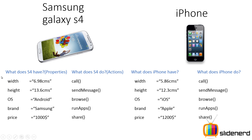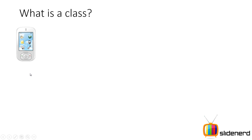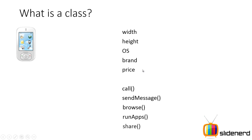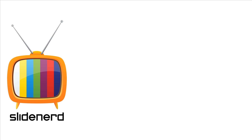You notice there are certain properties which are common to both your iPhone and your Samsung Galaxy S4, and the values are different for both. So what is a class? Very simple — the class is the list of common property names between both objects. Width, height, OS, brand, price are the common properties that apply to any mobile phone, and call, send message, browse, run apps, share are the actions most mobile phones perform. This is what a class is — class phone, with properties and actions inside it.